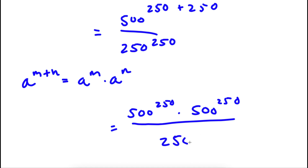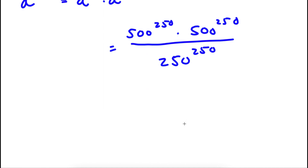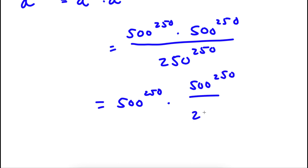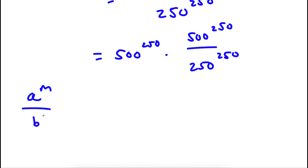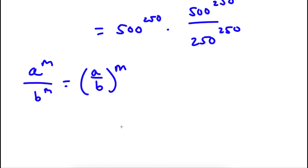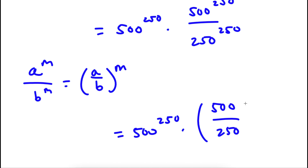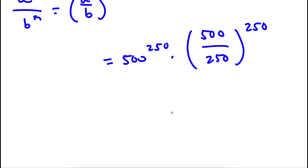Now I have this over 250 to the power of 250. I can rewrite this as 500 to the power of 250 times 500 to the power of 250 over 250 to the power of 250. Now, if I have something in the form a to the power of m over b to the power of m, this is equal to a over b to the power of m. So 500 to the power of 250 over 250 to the power of 250 equals 500 over 250 to the power of 250. Now, 500 over 250 is simply equal to 2.